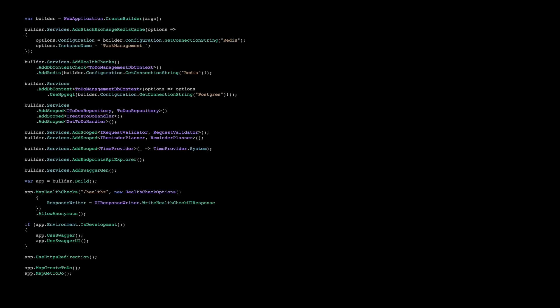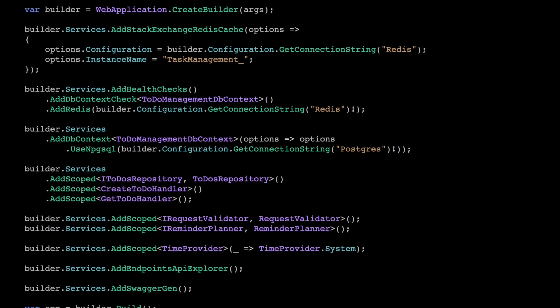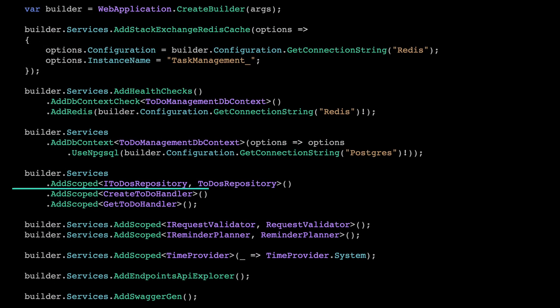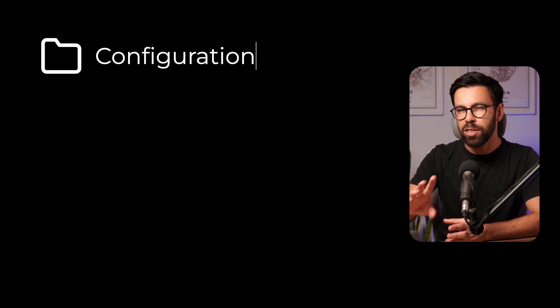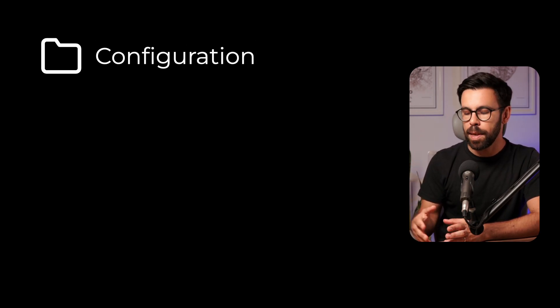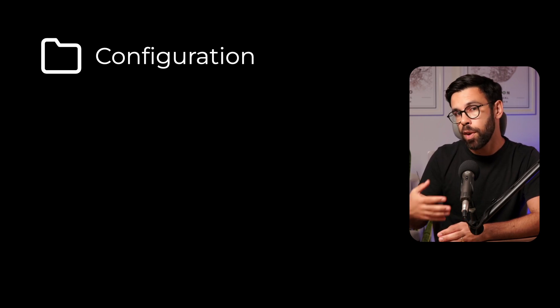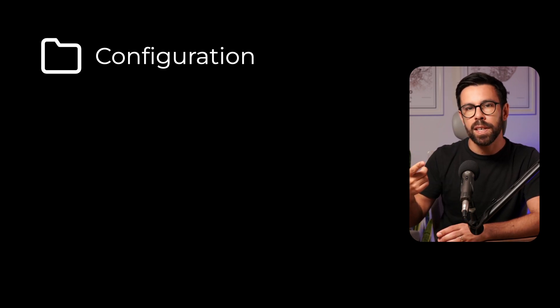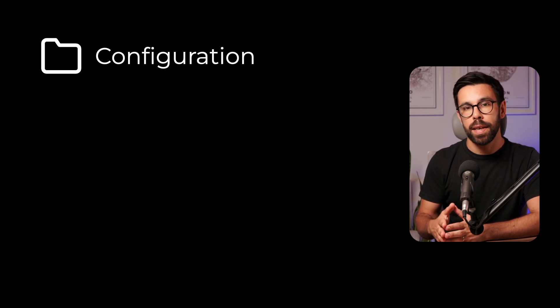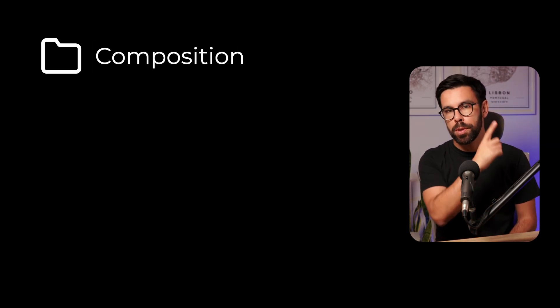So let's see a practical example. I want to refactor this program.cs file. The first thing I will do is find a feature and then decide where to move that code. I know it will be an extension method, but where? The first step is to create a folder — you can name it as you prefer. It might be 'setup' or 'configuration', but I don't recommend 'configuration' since that name is already used for loading things like environment variables and app secrets. The name I like to use is 'composition'. Then I'll create a file that will hold the extensions for that feature.